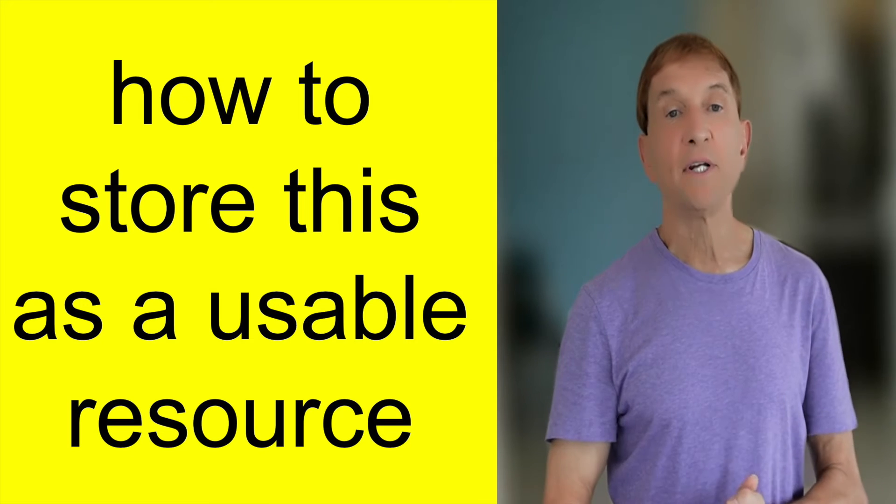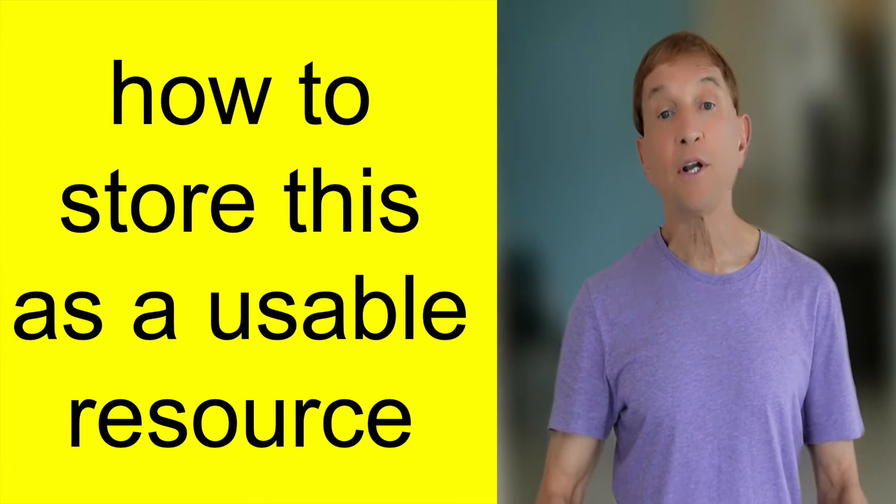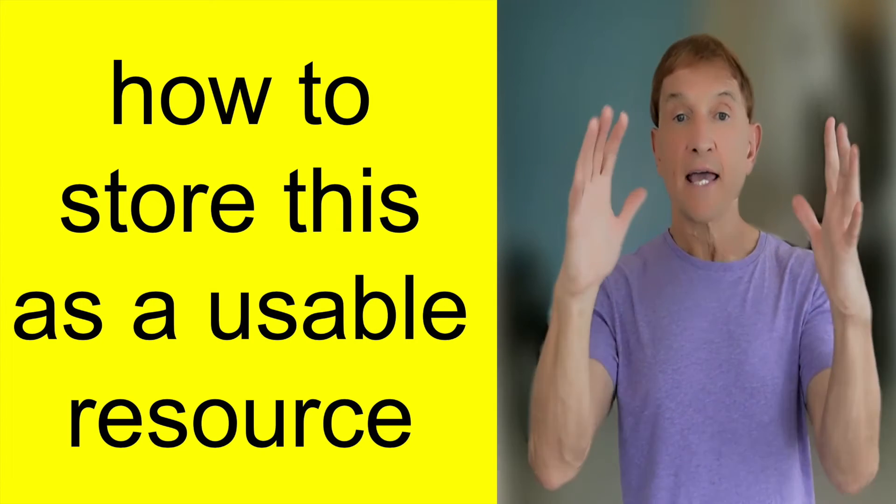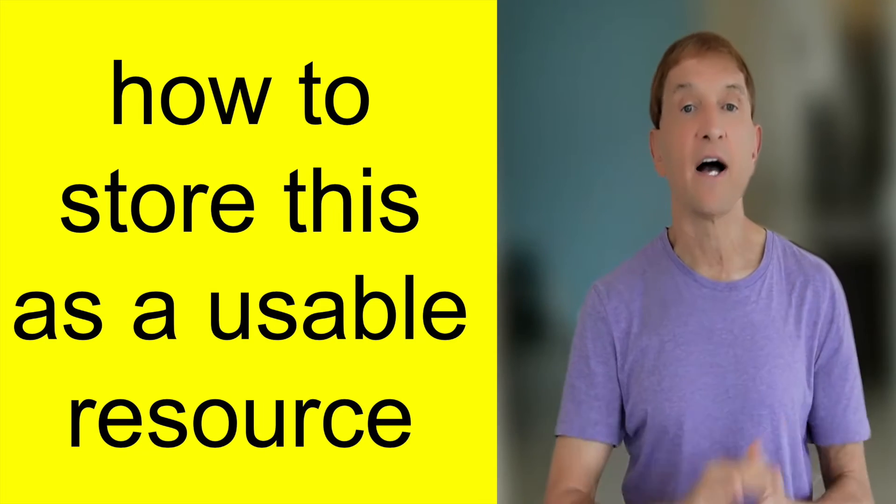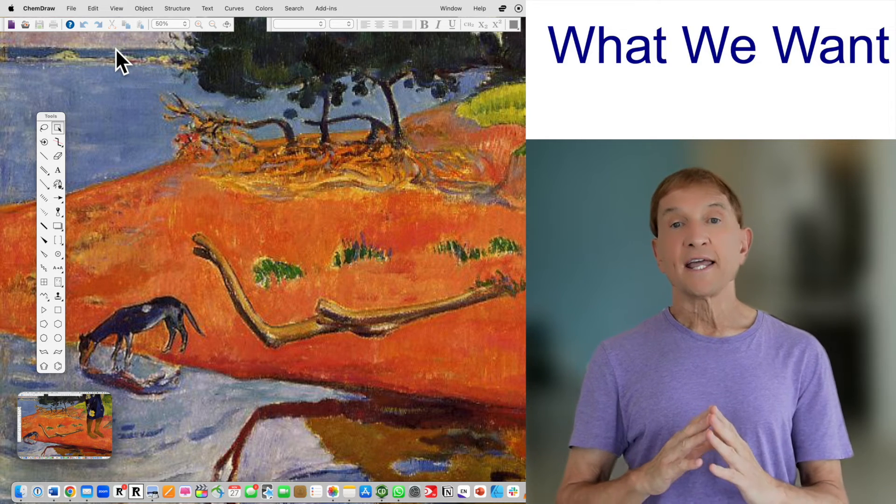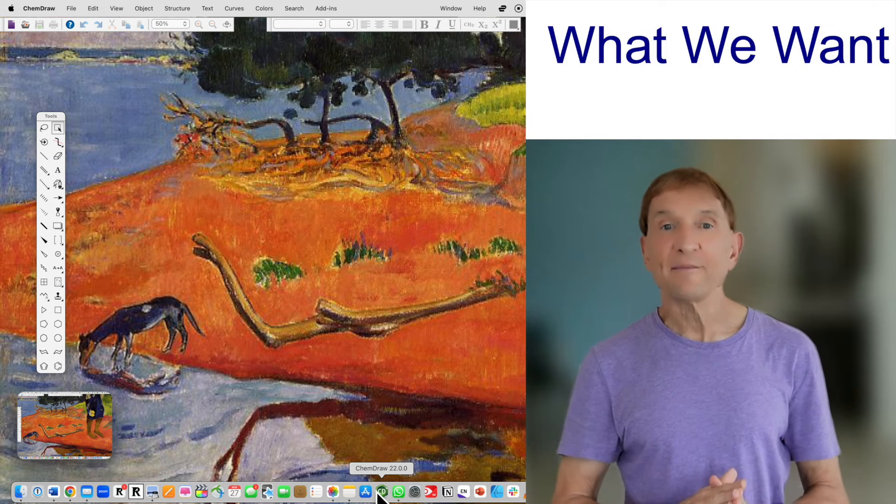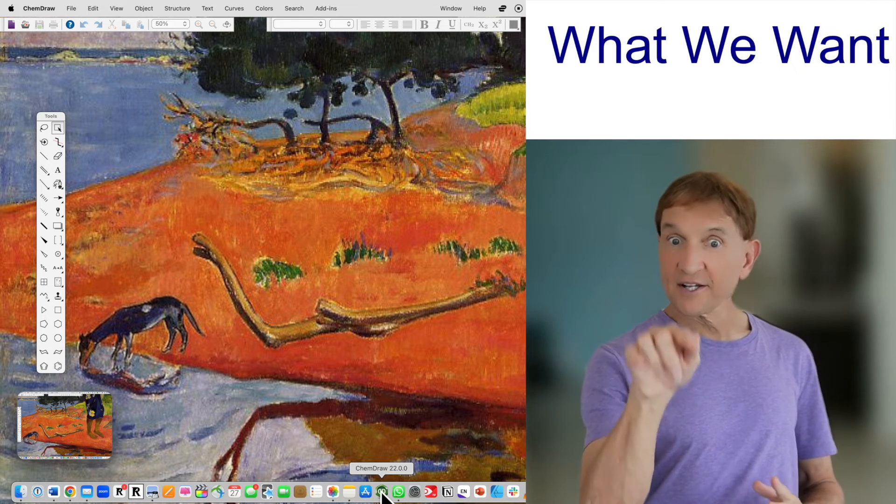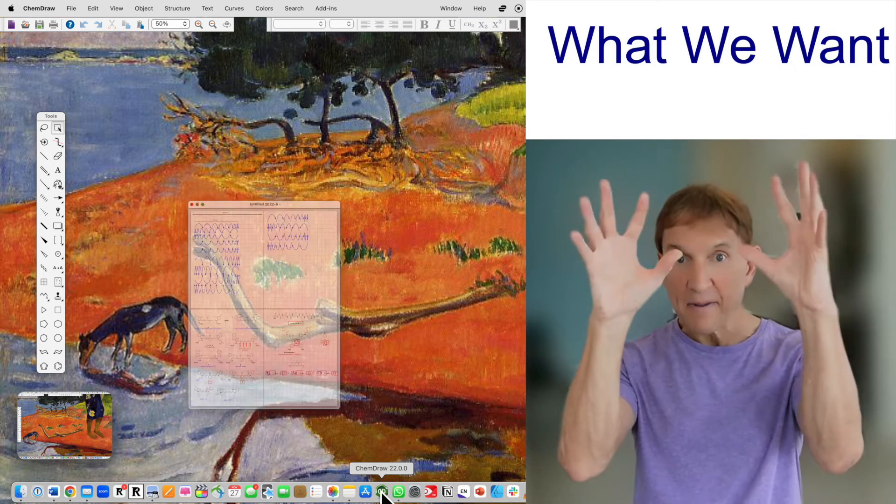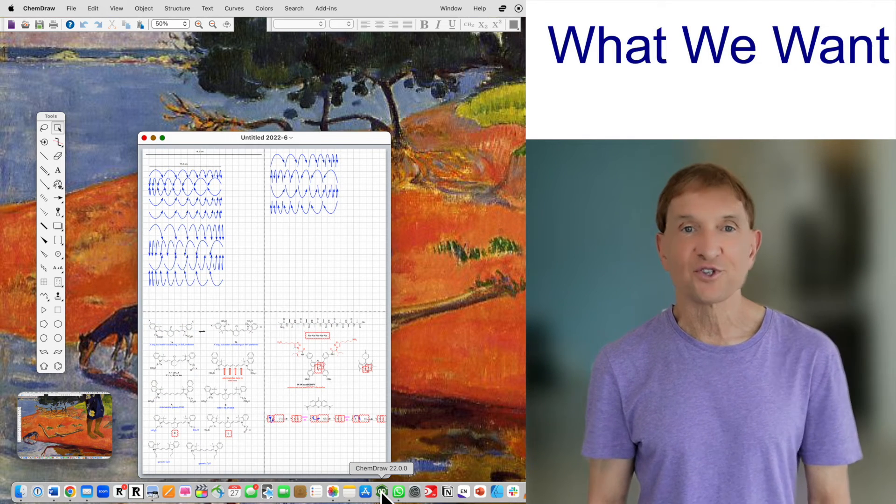Now I want you to save that document as a usable resource. We're going to save it as a ChemDraw stationary file. What we want is a file that will open when we open ChemDraw: you may click on ChemDraw, open it in one click, bang, everything's there for us to draw a mechanism.